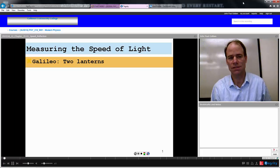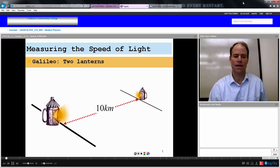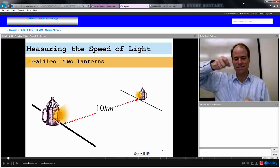One of the first is an attempt by Galileo, and here was the general setup. You had two lanterns separated by 10 kilometers, and the possessor of the first lantern would have it covered, and at a specified time, they would start the time, he would release, he or she would release the lantern.